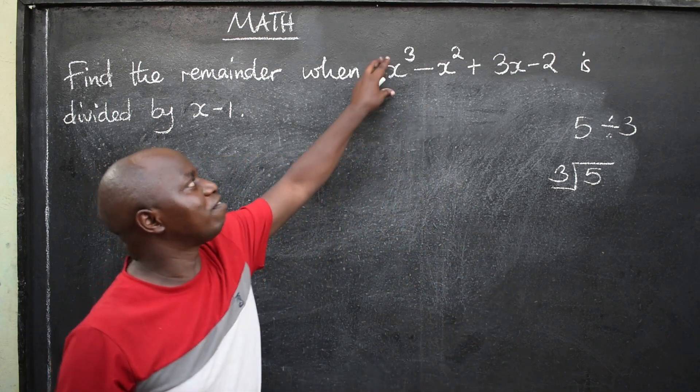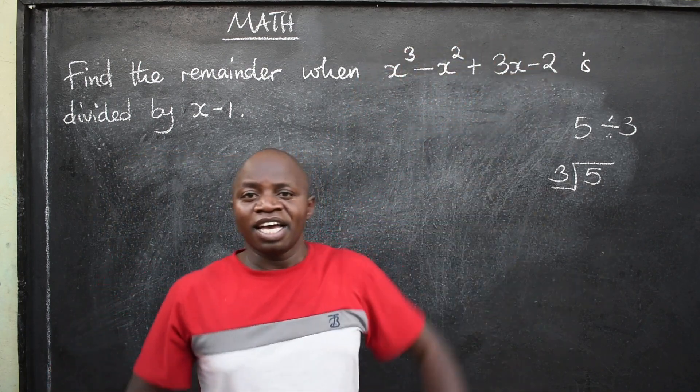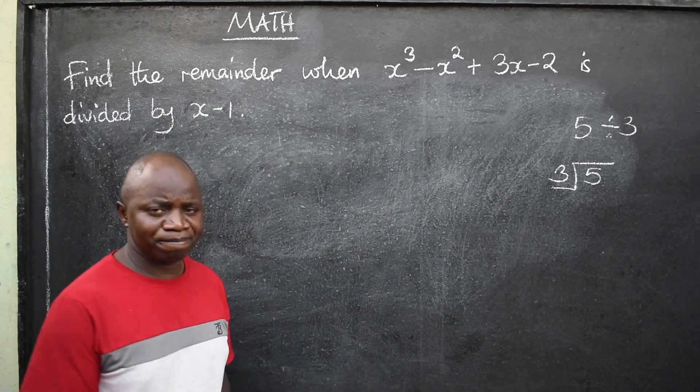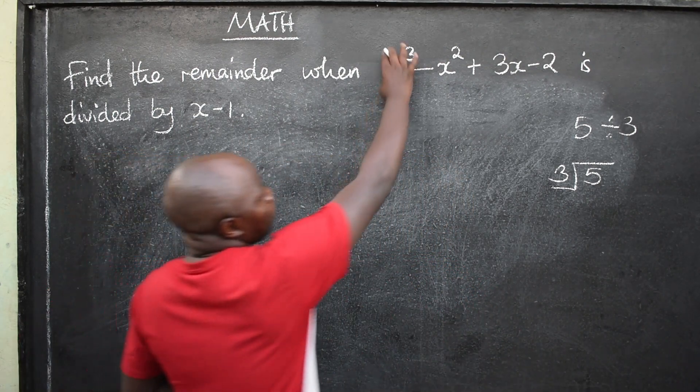Now, in this case, we have a polynomial here. And we also have the divisor here. What will be the remainder when you divide?